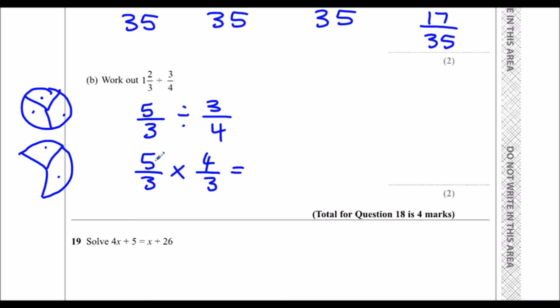So then multiply the top. To multiply fractions we multiply the top, multiply the bottom. Five times four is twenty, three threes and nine. So we've got twenty over nine. It doesn't say we have to give our answer in a certain form, so I'm going to leave it as twenty over nine.